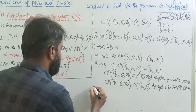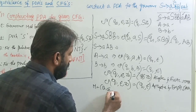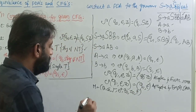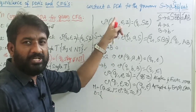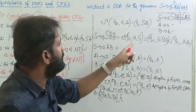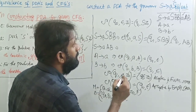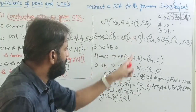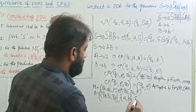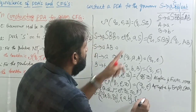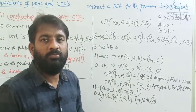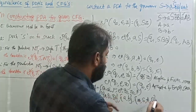Now define the pushdown automaton formal definition. M = (Q, Σ, Γ, δ, q₀, Z₀, F). What is Q — the set of states? Q = {Q0, Q1, Qf}. Sigma equals the input symbols: small a and small b. The stack alphabet is the symbols stored in the stack: starting from Z₀, then S, then capital A, then capital B. As mentioned, all variables are going to be added onto the stack. The initial state is Q0, bottom-of-stack symbol is Z₀, and final state is Qf.